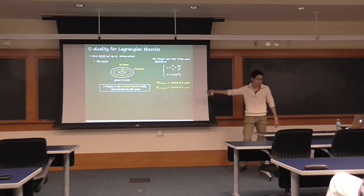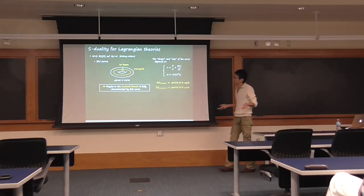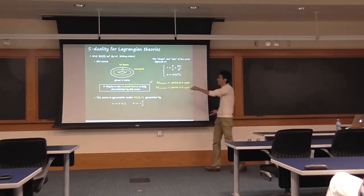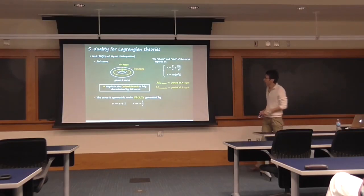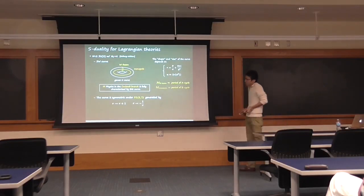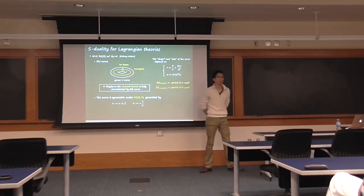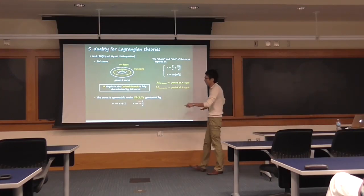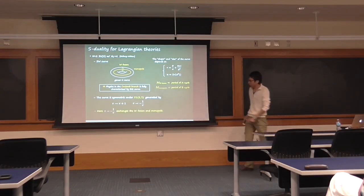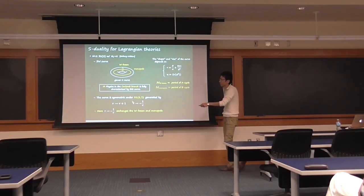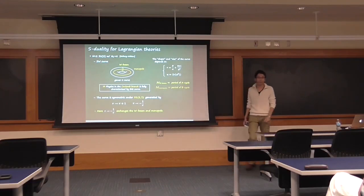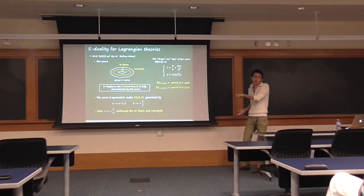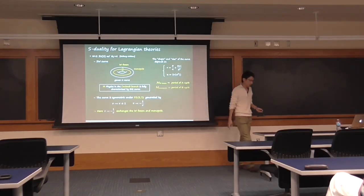When you have the same curve, you have the same physics in the IR. The curve is symmetric under the SL(2,Z) transformation, which means the IR physics in the Coulomb branch is symmetric under this transformation. S-duality exchanges the two cycles — the A-cycle and B-cycle — which means replacing tau with -1/tau exchanges dyons and monopoles, electric and magnetic objects. That's the essence of S-duality.